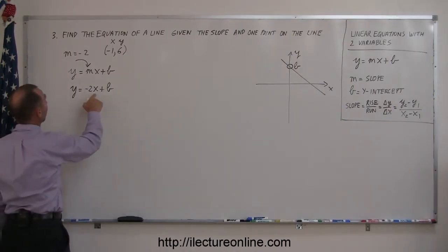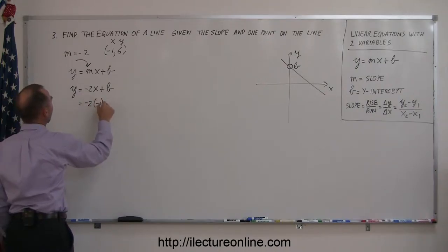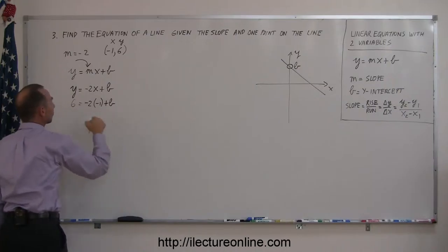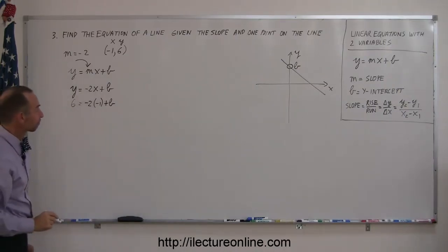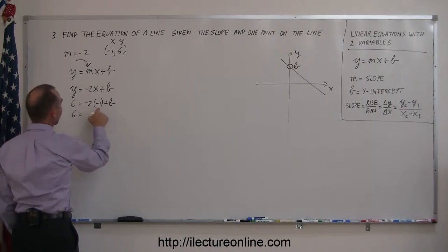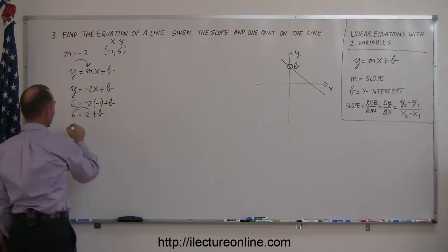So if you replace every x by negative 1, so negative 2 times negative 1, and replace the y by 6, you can now solve this equation for b. So we have 6 equals negative 2 times negative 1, that's positive 2 plus b, move the 2 to the other side, subtract the 2 from this side, so we have 6 minus 2 equals b, or 4 equals b.